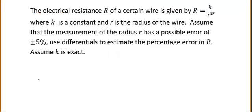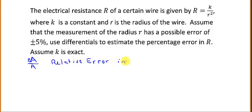First, let's point out a general concept. If we look at the area of a circle, the error in the area divided by the area itself is the relative error in area. Similarly, for the length of a rectangle, the error in the length divided by the length itself is the relative error in the length. The relative error in any quantity is the error in that quantity divided by the quantity itself.